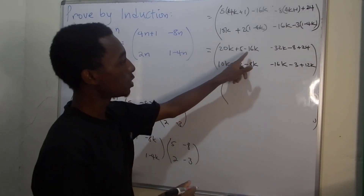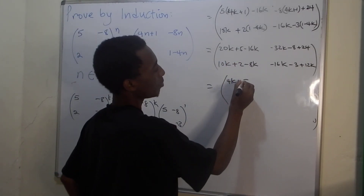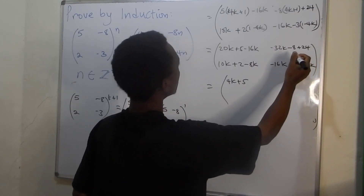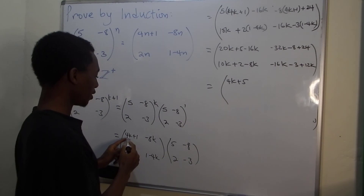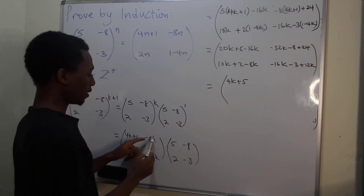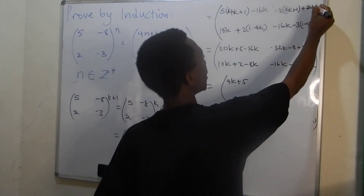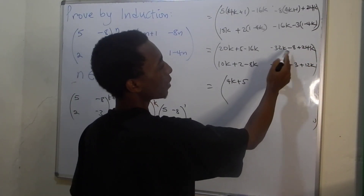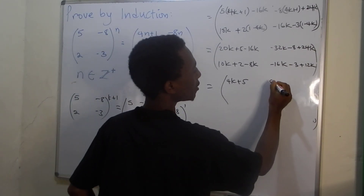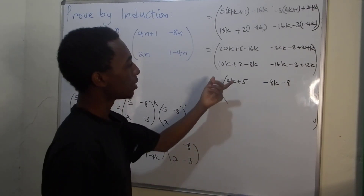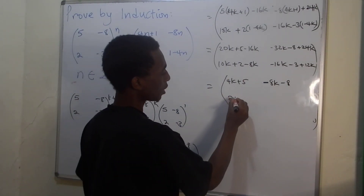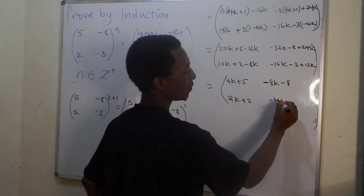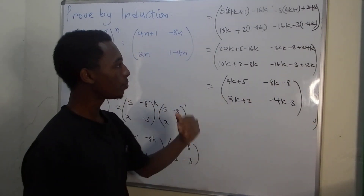Simplifying: top-left gives 20k minus 16k plus 5, which is 4k+5. Top-right gives -32k plus 24k minus 8, which is -8k minus 8. Bottom-left gives 10k minus 8k plus 2, which is 2k+2. Bottom-right gives -16k plus 12k minus 3, which is -4k minus 3.